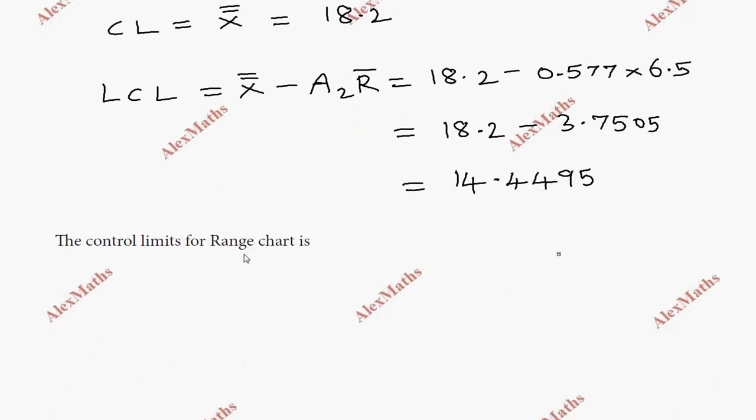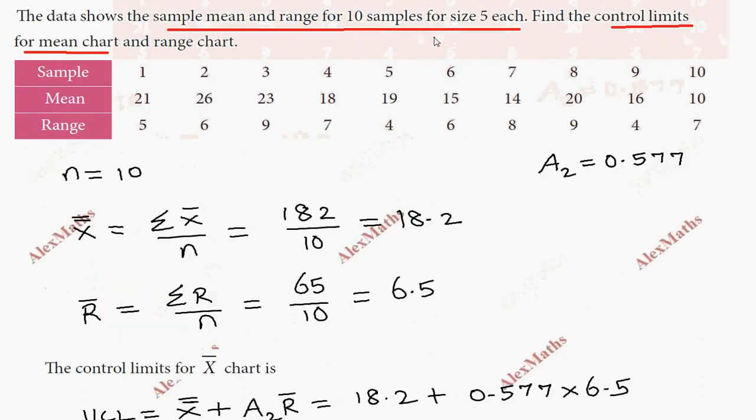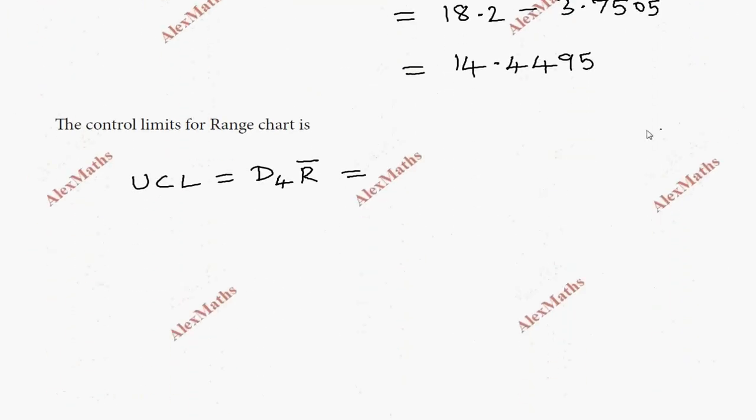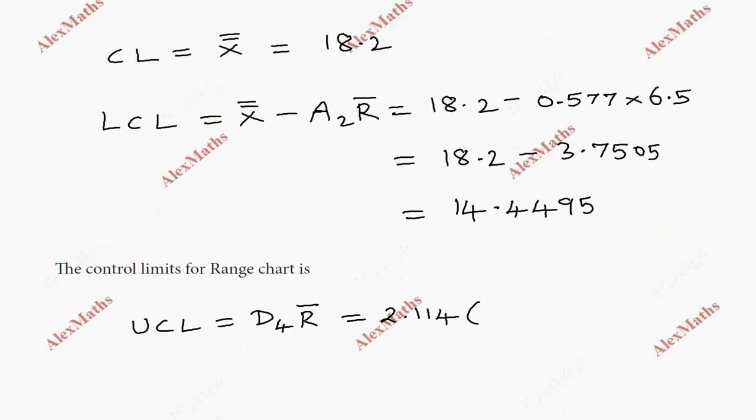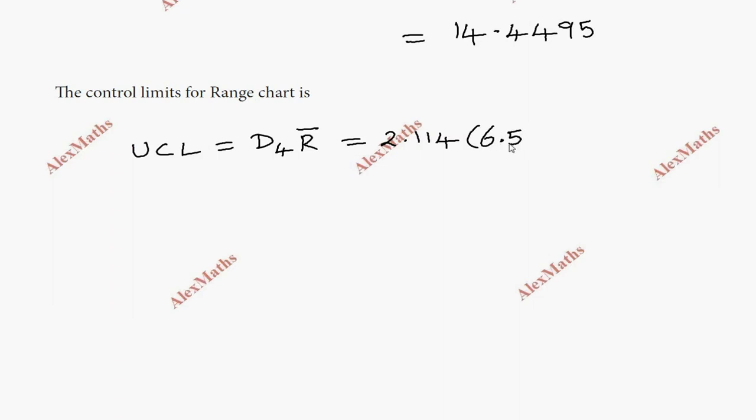Control limits for range chart. The upper control limit is D4 times R bar. For sample size n equals 5, the D4 value from the table is 2.114. So 2.114 times R bar which is 6.5. When we multiply, the value is 13.741.